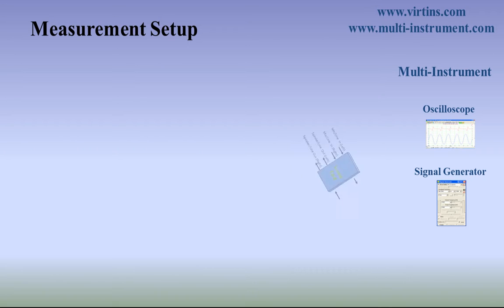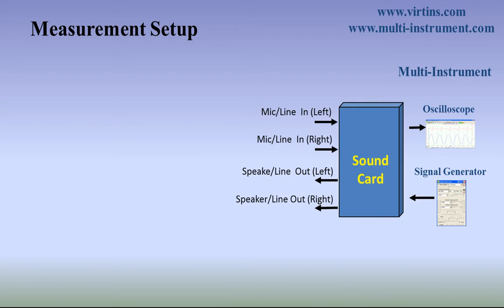The hardware of the setup is a computer with a sound card with stereo inputs and outputs. The signal generator will generate a sine wave with a known frequency. The generated signal will be output by a speaker connected to the left output channel of the sound card.